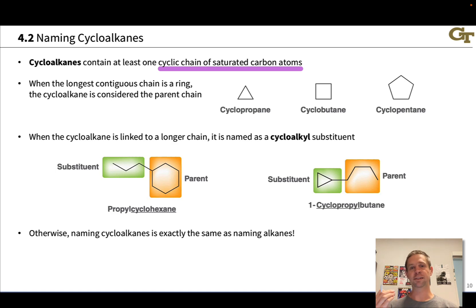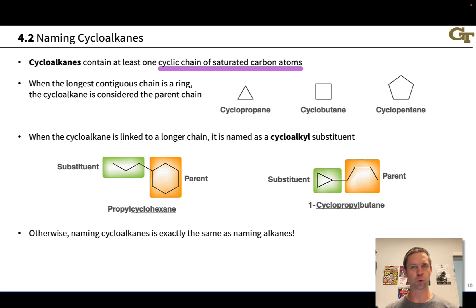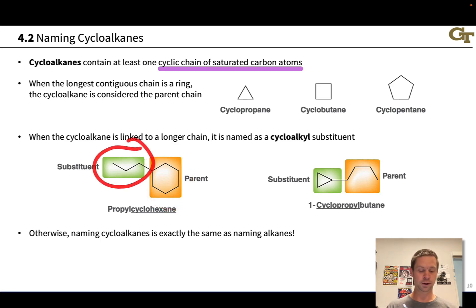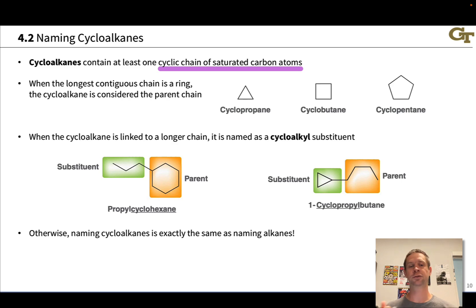When the cycloalkane is linked to a longer chain, we can name the cyclic group as a cycloalkyl substituent. For example, we can talk about 1-cyclopropylbutane, where the parent chain is a four-carbon butane and the cyclopropyl group is a three-carbon cyclic substituent linked to carbon one. If the six-membered ring is larger than the three-carbon linear fragment, the three-carbon fragment is a propyl substituent and cyclohexane is the parent chain. Aside from these quirks, naming cycloalkanes is exactly the same as naming alkanes.